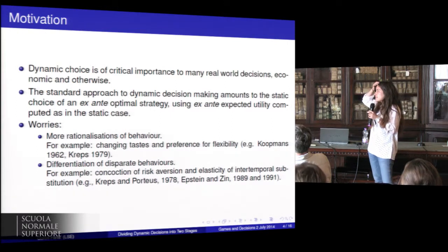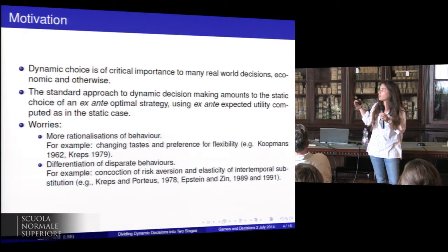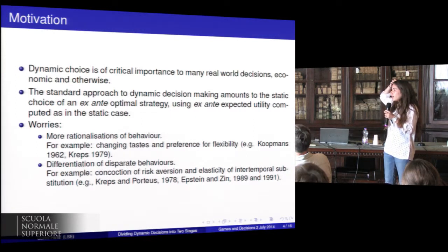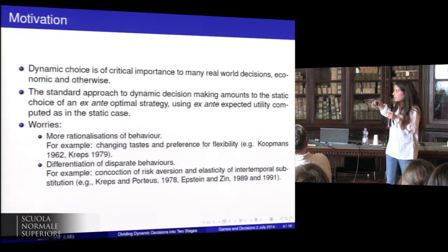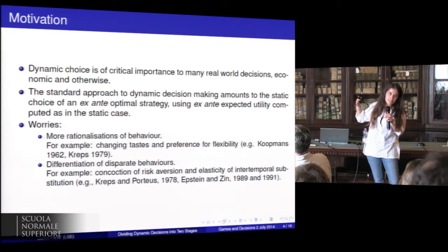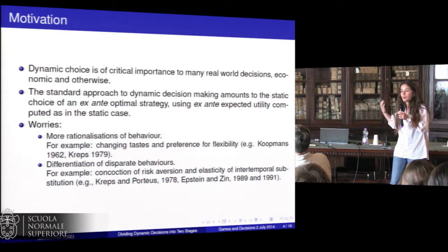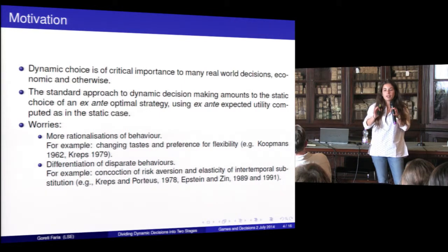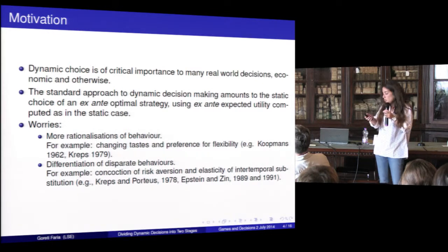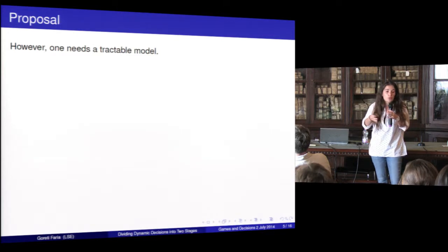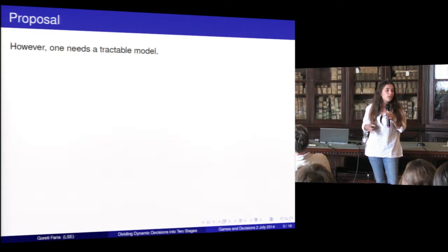Some people try to address this by creating non-expected utility models — for example, Kreps and Porteus is one example. And Kreps also tries to address the case of preference for flexibility. So there are several models being proposed to deal with these issues. However, they're still very different models and they don't account for all of these possible dynamic behaviors — they just account for one at a time. So if we try to account for all possible behaviors at the same time, we would have a very complicated model — intractable, probably even impossible to construct mathematically.